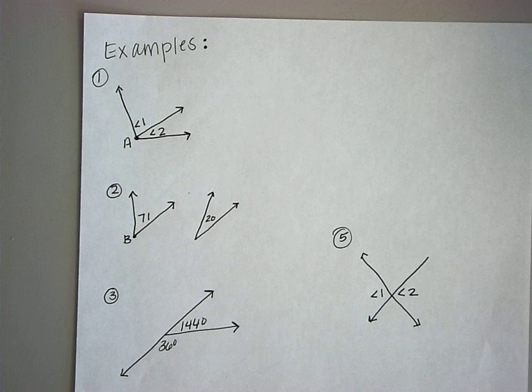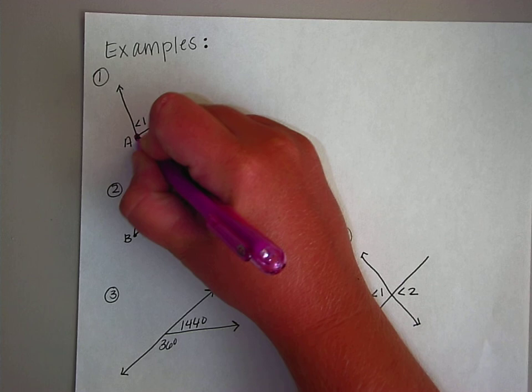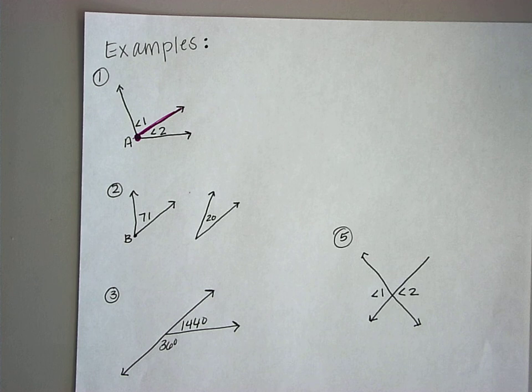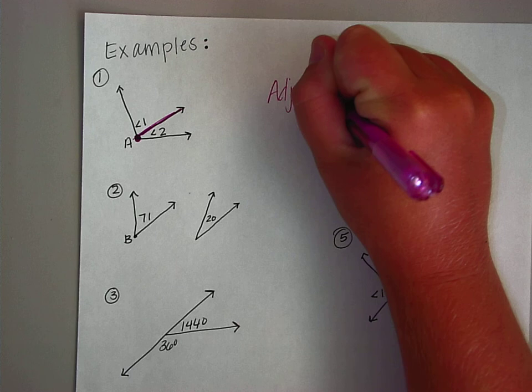They do share a common vertex and they share a common side. So if they share a common vertex and share a common side, what do we think that is? It is adjacent.